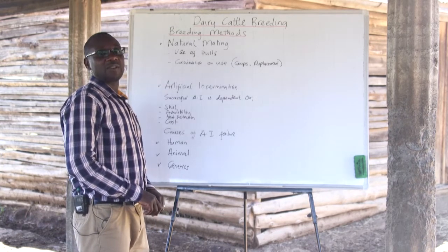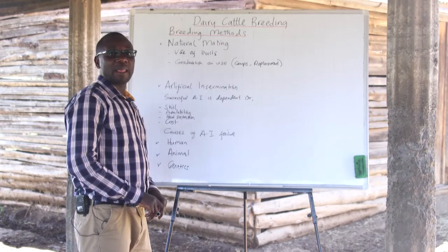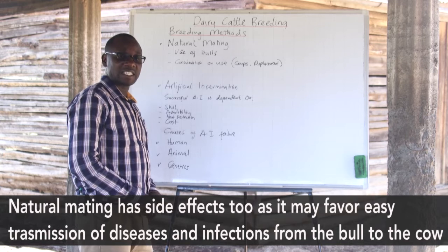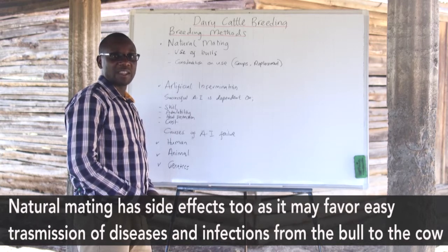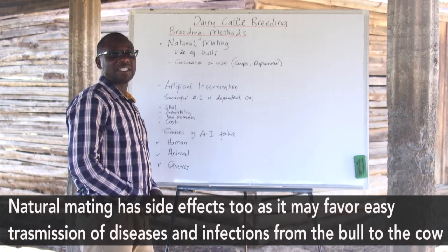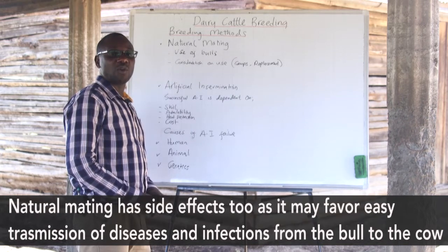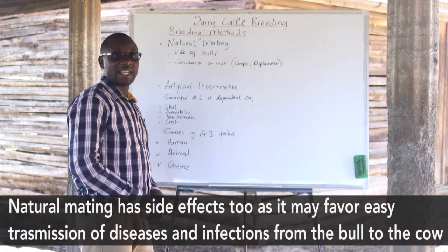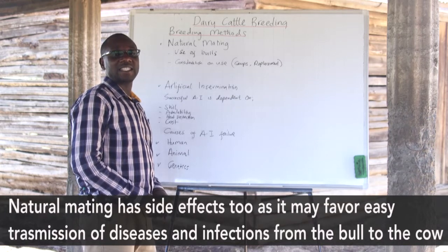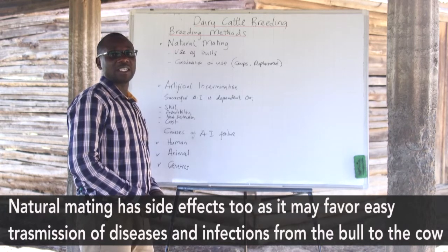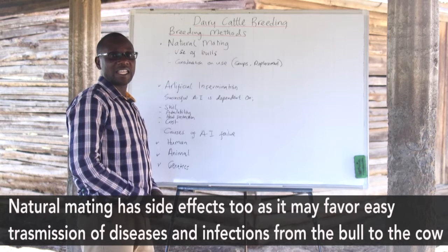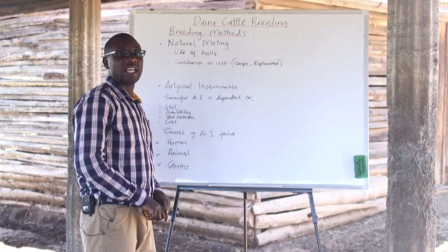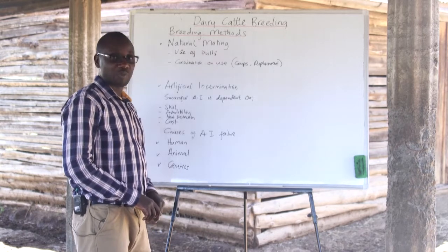First, when bulls are used for breeding, they may easily transmit diseases to the cows. Therefore, before a farmer decides to use a bull, the bull must be observed to confirm it is in good health and does not transmit any diseases to the cows or to the offspring.